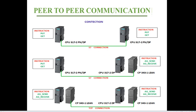The second layout is where the first PLC has a Profinet port but the second doesn't. We can use a communication processor module to connect the two PLCs. On one side the instruction is PUT/GET, and on the other side we use AG_SEND and AG_RECV.